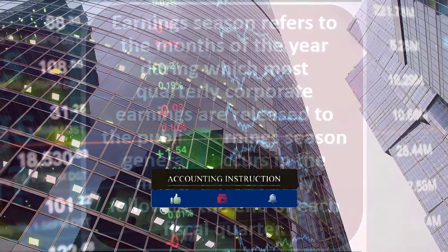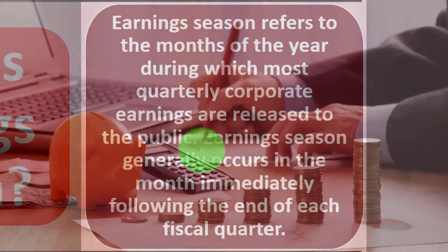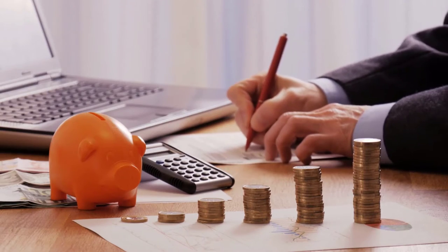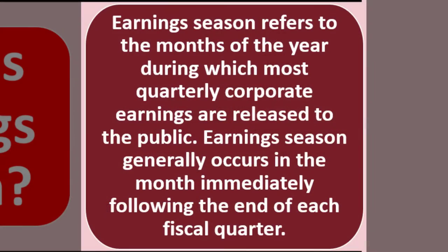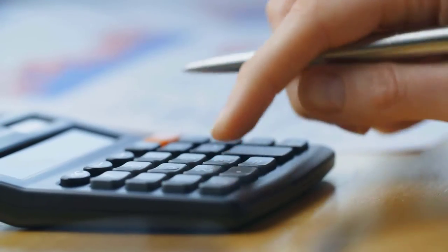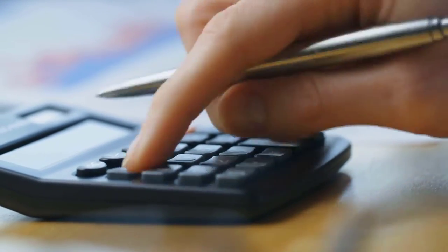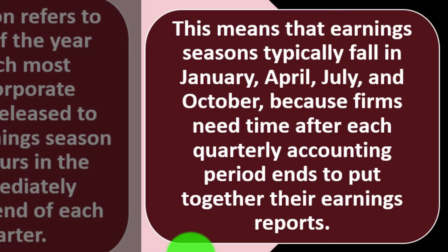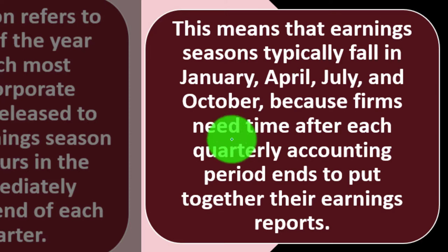Earnings are typically released on a quarterly basis. We break down the year into quarters, and we get earnings periodically throughout the year that everybody uses to make their predictions and investments. Earnings season generally occurs in the month immediately following the end of each fiscal quarter — dividing 12 months by four gives us four three-month quarters. This means earnings season typically falls in January, April, July, and October.